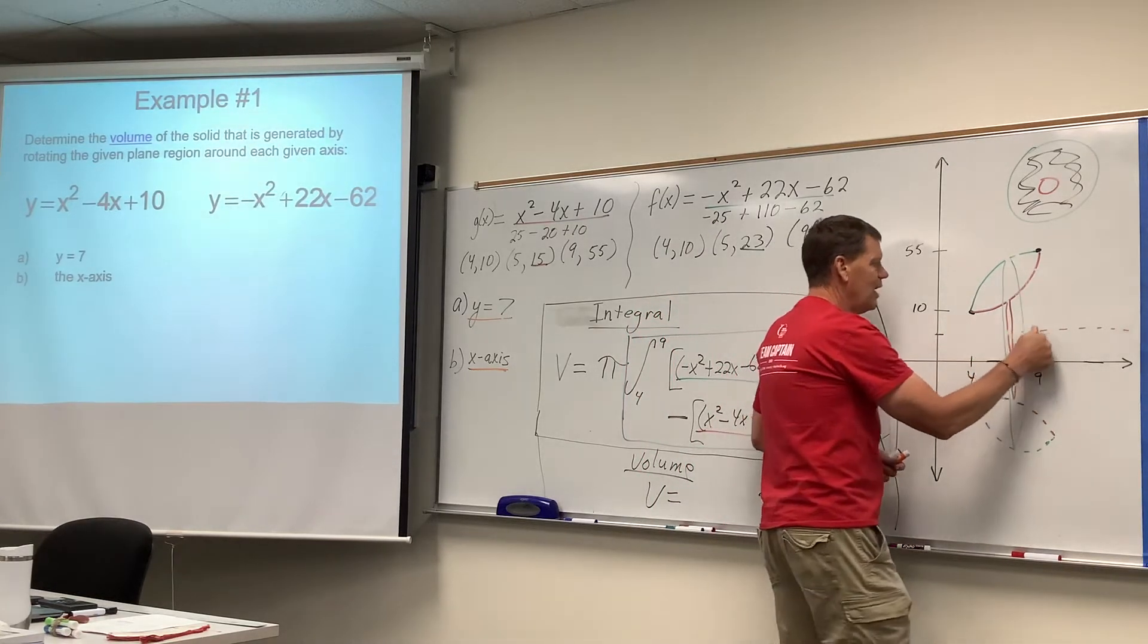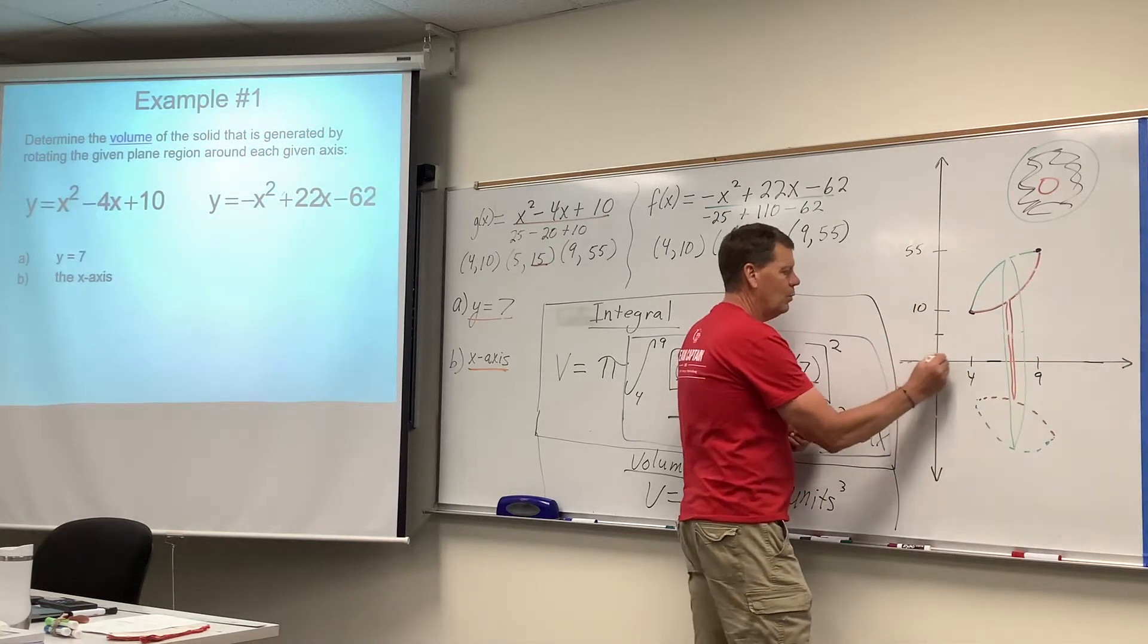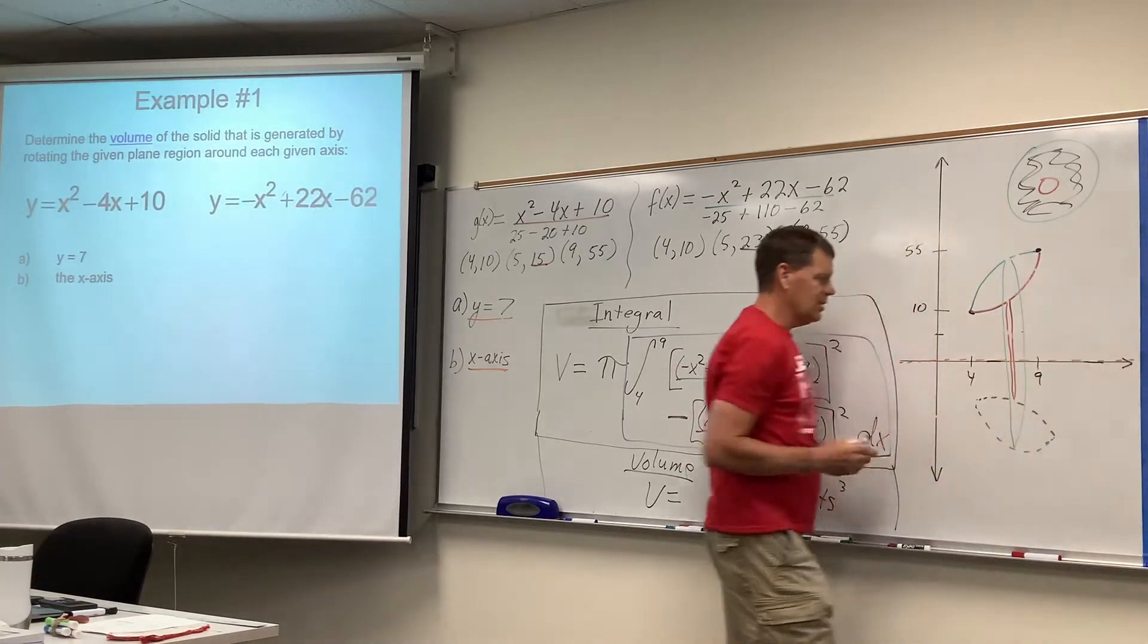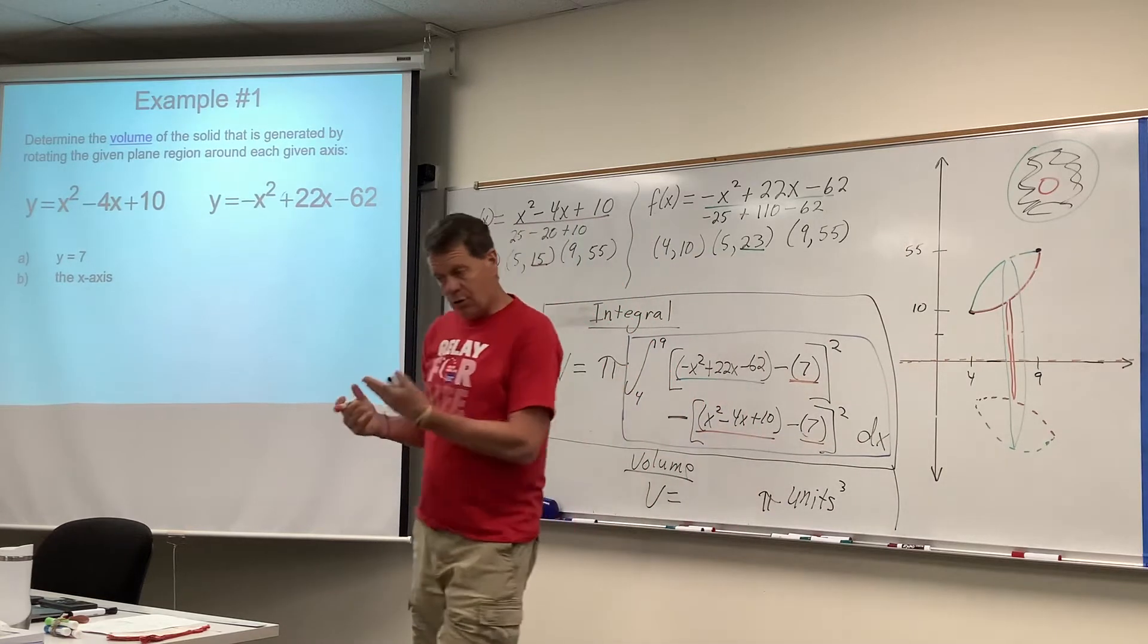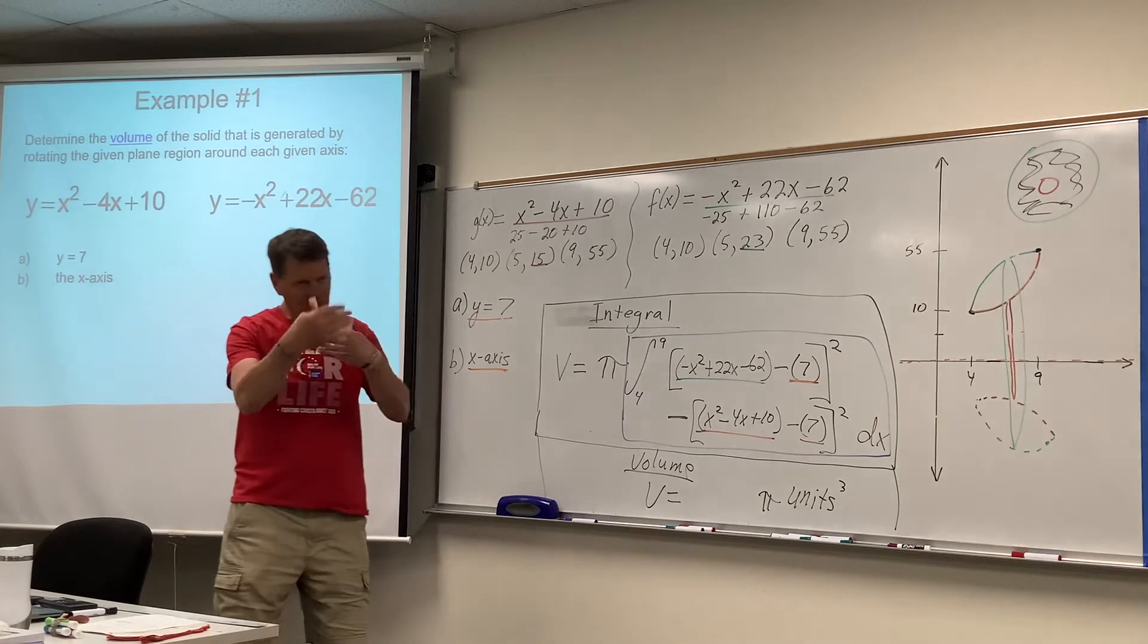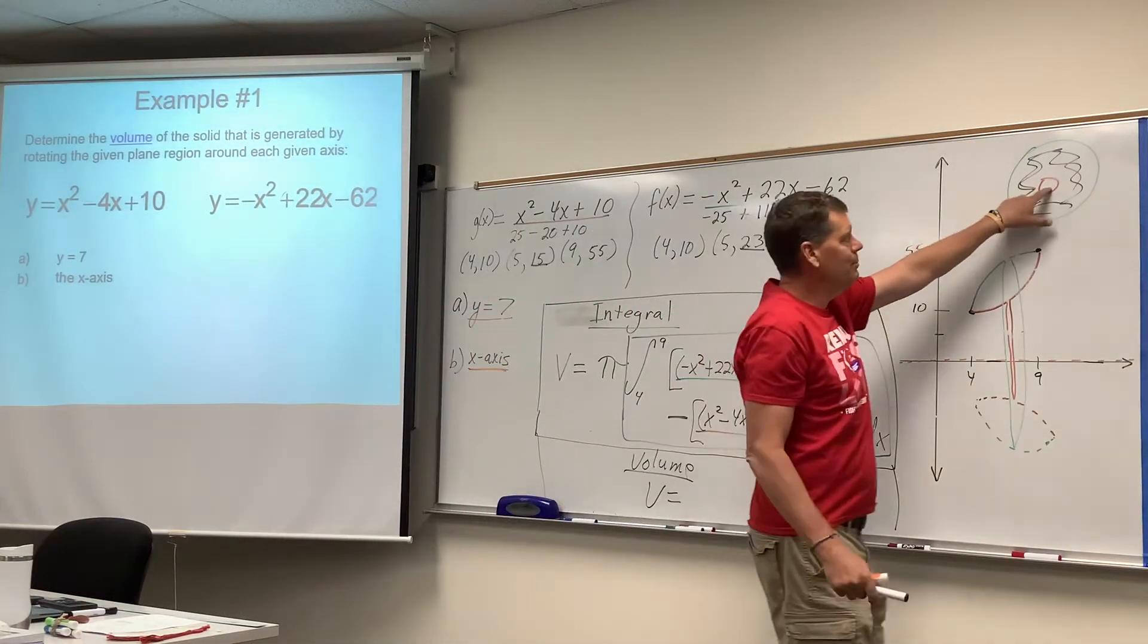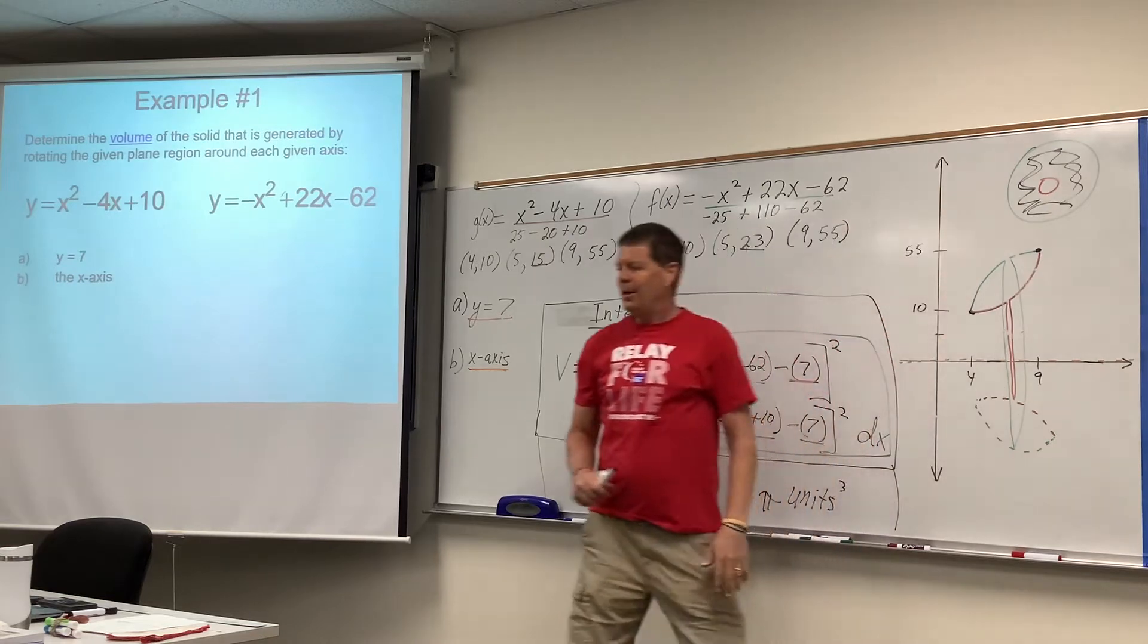So all we're doing is we're changing. Instead of revolving it around y equals 7, we're revolving around the x-axis, which I would point out to you is also a horizontal line. So again, the logic here would be to be thinking in terms of cross-sectional circles with holes in them, washers.